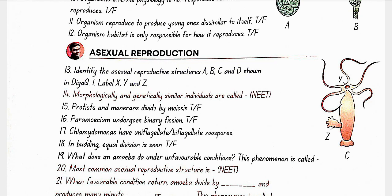Protists and monerans divide by meiosis — false. Paramecium undergoes binary fission — true. Chlamydomonas has biflagellate zoospores. In budding, equal division is seen — false, unequal division is seen. Under unfavorable conditions, amoeba withdraws its pseudopodia and secretes a three-layer covering; this phenomenon is called encystment.